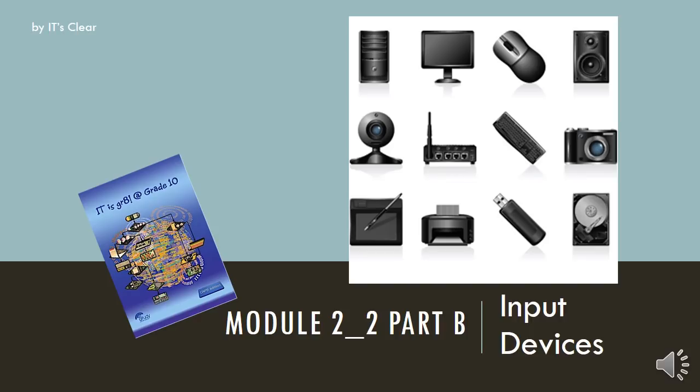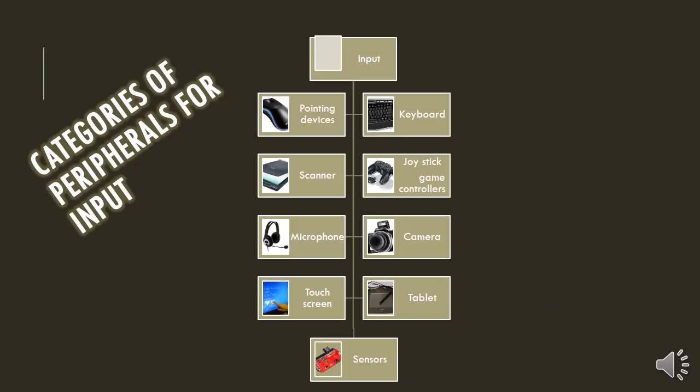Module 2.2 Part B: Input Devices. Let's look at the categories for peripherals for input. These are all the different types of input devices.